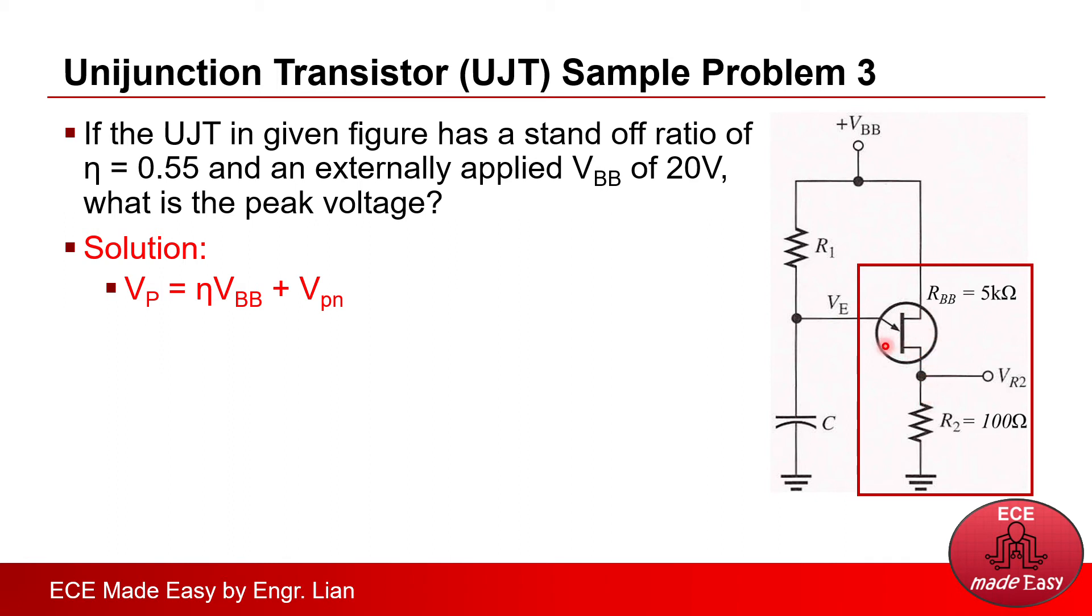And if we will get the equivalent circuit of this part, we will have this equivalent circuit where inside the UJT, there is the Vpn or the equivalent diode, Rb2 and Rb1. And Rbb is the sum of Rb2 and Rb1, which is 5 kilo ohm. So, if we will check the formula, Nvbb here is just the voltage across Rb1 based on our previous derivation.